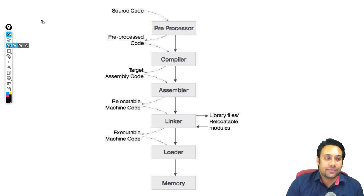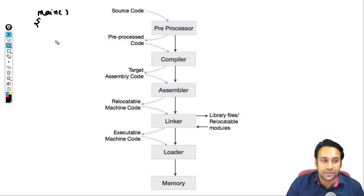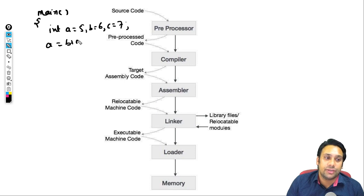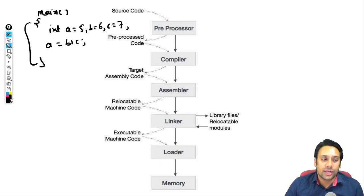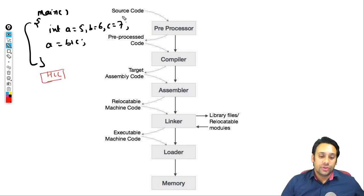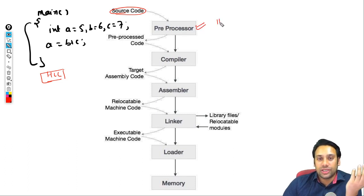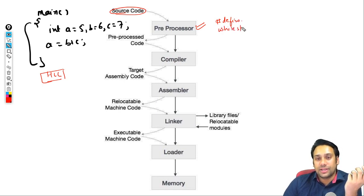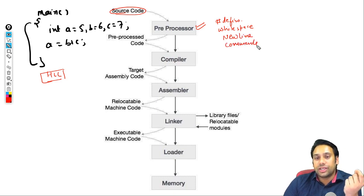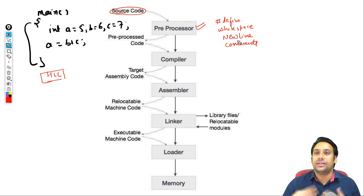When you write a program — a C language program, which is a high level language — for example: integer a = 5, b = 6, c = 7, and a = b + c. This program is in high level language, and we call this the source code. This program is then given to the pre-processor when you execute it. The pre-processor removes all hash define statements, extra white spaces, new line characters, and comments — all things written for user understanding.